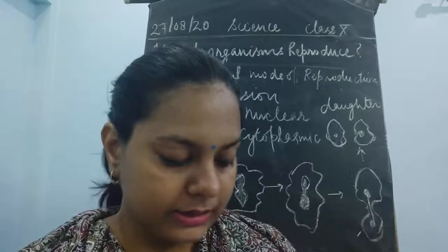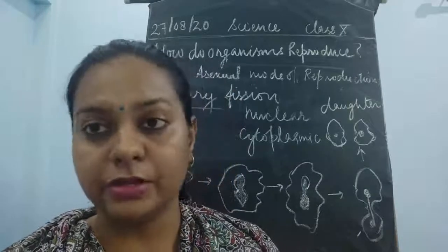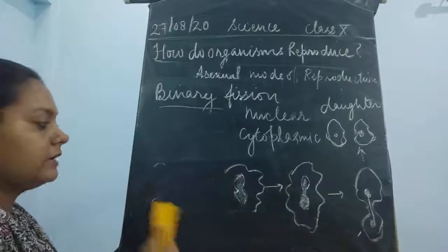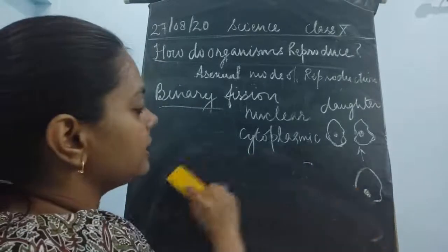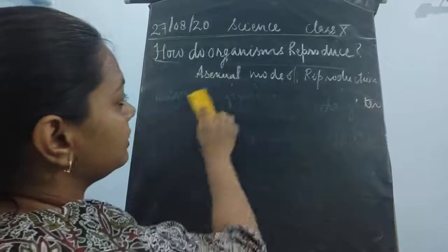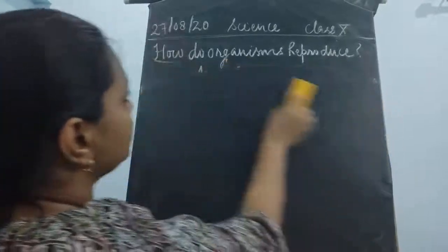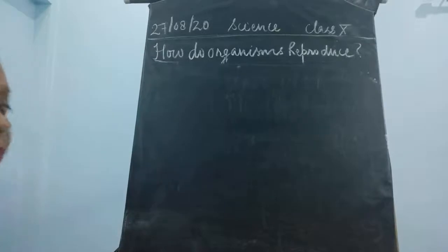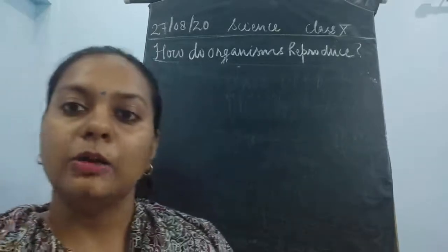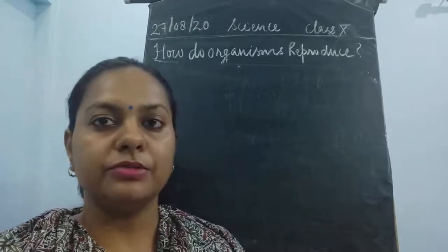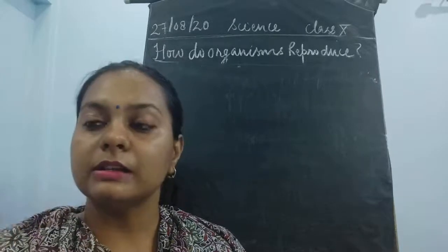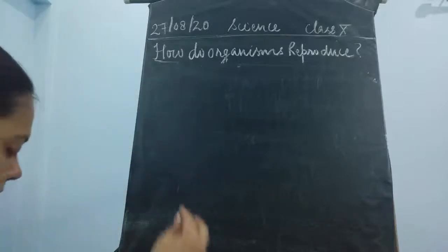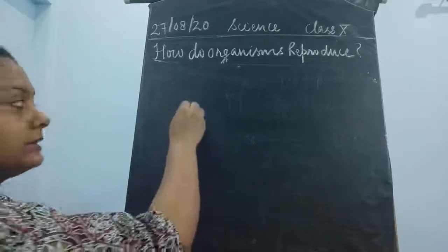In binary fission, amoeba is one example, but there are many more — such as Planaria and Leishmania. In binary fission, only two new daughter cells are formed. Now we move to the next type: multiple fission. Multiple fission is when one parent cell divides into a large number of cells — more than two.